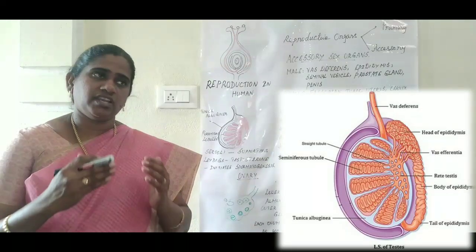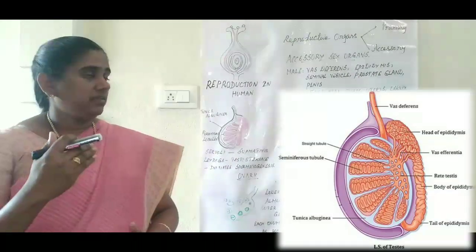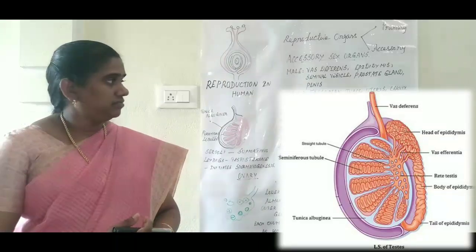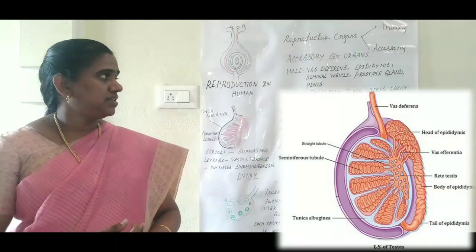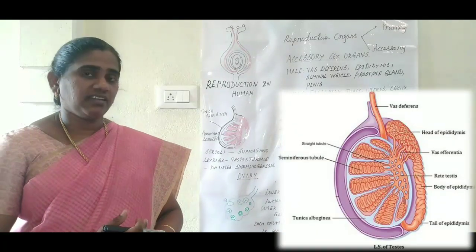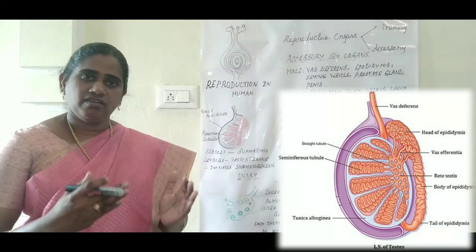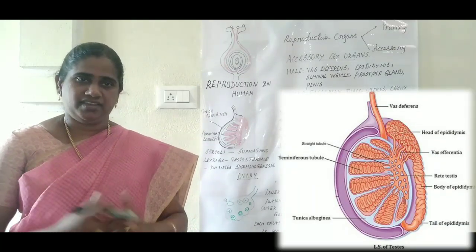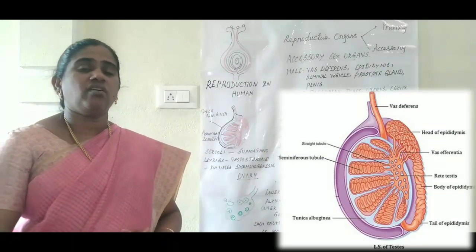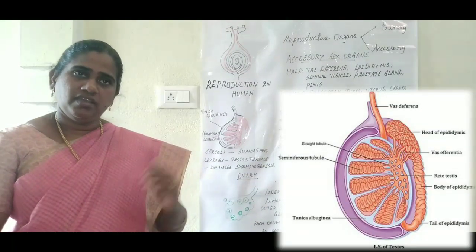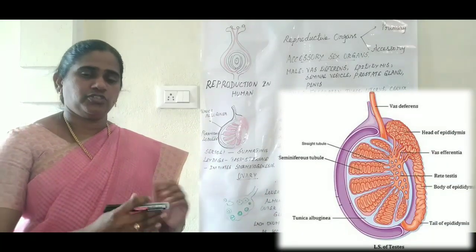Let's see what accessory organs are present in the male reproductive system. In the male reproductive system, the accessory organs are: epididymis, seminal vesicle, prostate gland, and penis. These organs are called accessory organs because they are not directly involved in the production of gametes, but they support the reproductive process.